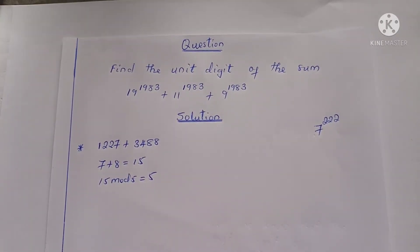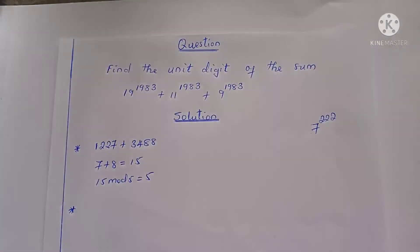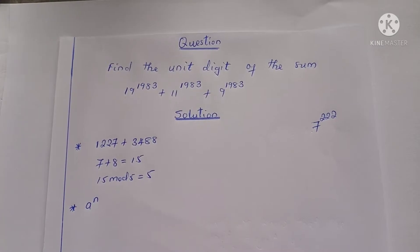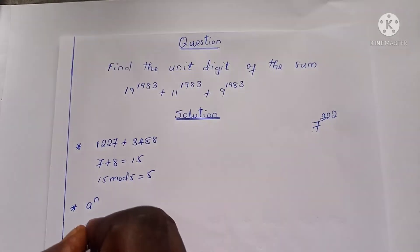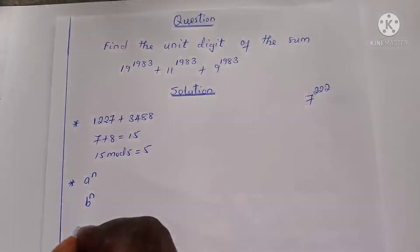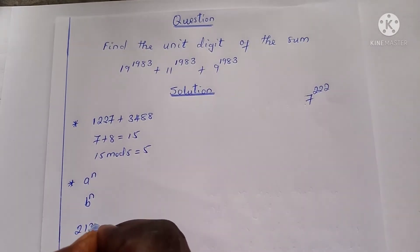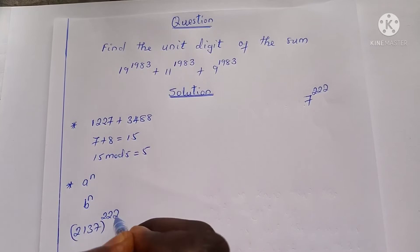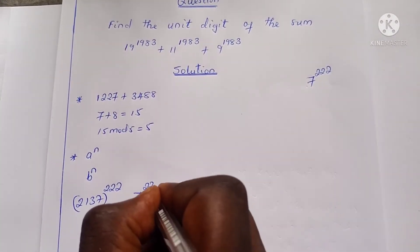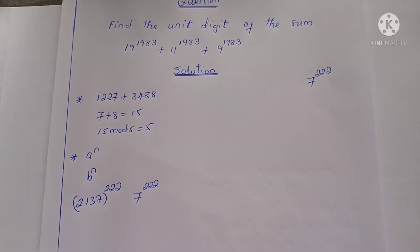Secondly, the unit digit of the integer a raised to the power n, where a is not a single-digit number, is the unit digit of b raised to the power n, where b is the unit digit of a and n is a positive integer. For example, to find the unit digit of 2,137 raised to the power 222, we simply need to find the unit digit of 7 raised to the power 222 — it gives you the same unit digit.